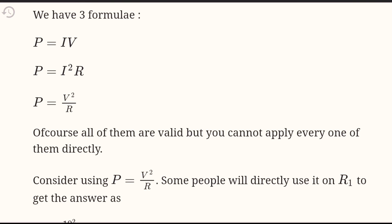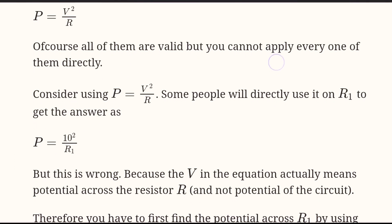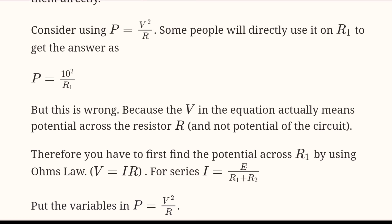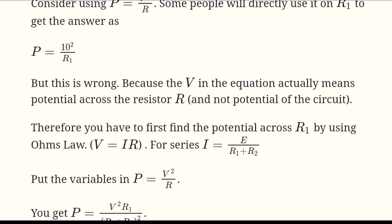The power formulas are: P equals i² times R, and P equals V² by R. That V² by R — please comment on this video. The power of the amplifier with a 5 ohms output load gives the value of V² by R. Some people will directly use R to get the answer as P equals 10 squared by R. This is the value of V² by R.